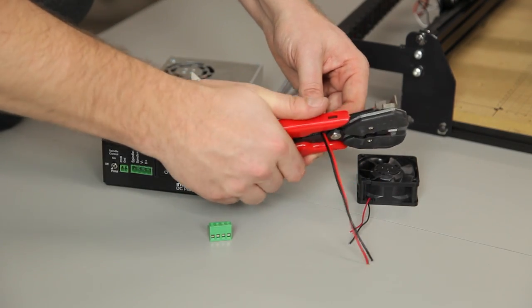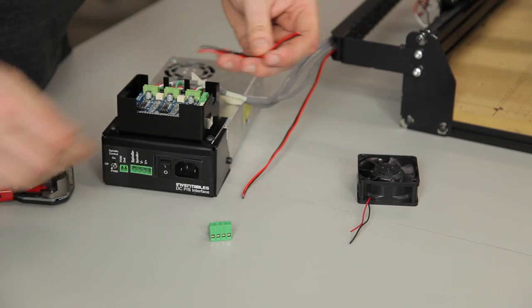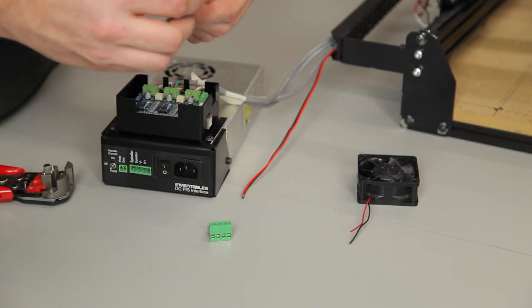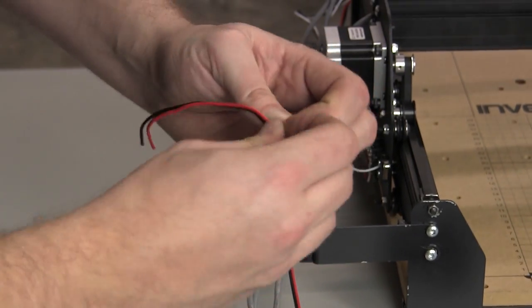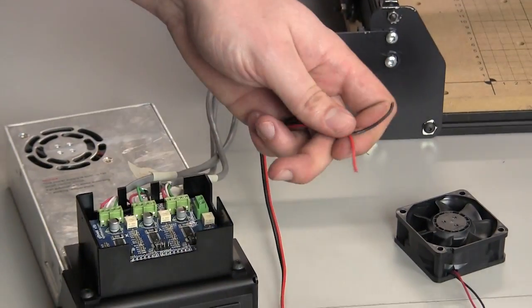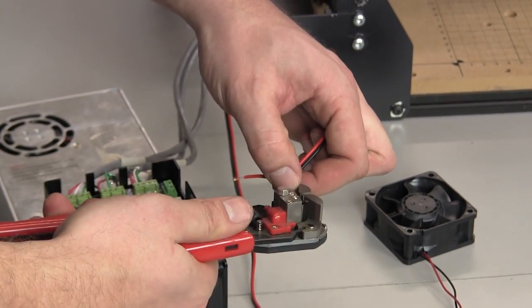Next trim about 6 inches from your zip wire. We'll use this to wire power from the power supply to the G-Shield. Pull apart the red and black wires at both ends and strip about a quarter inch of jacket off of them.